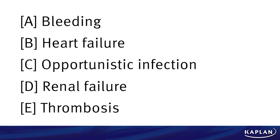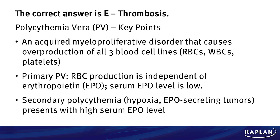The correct answer is choice E — thrombosis. What's the diagnosis? Polycythemia vera. That's the first step. If you knew it was PV from all the patient presentation, then it's simply asking yourself what causes the most morbidity and death — thrombosis.